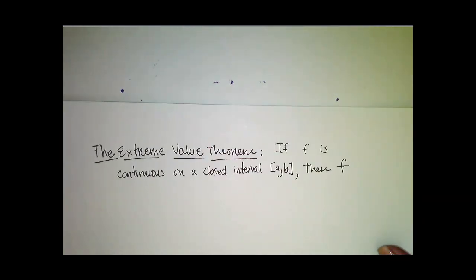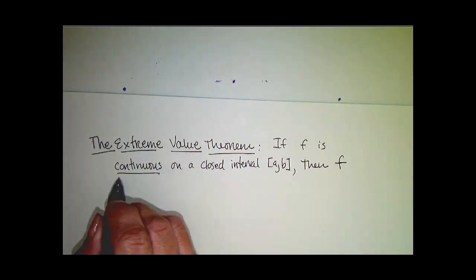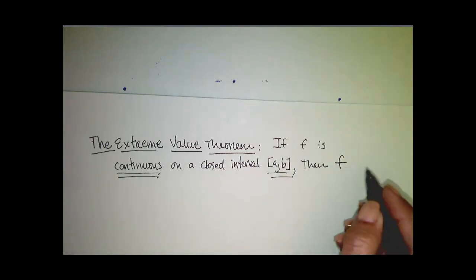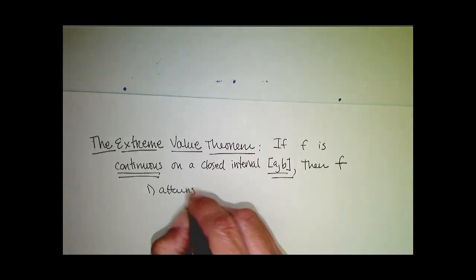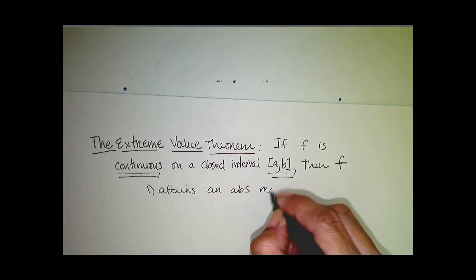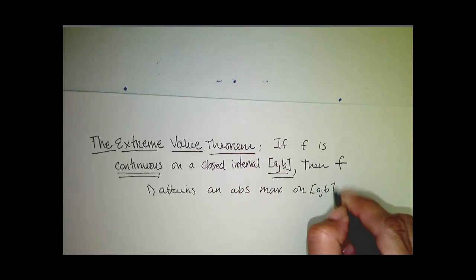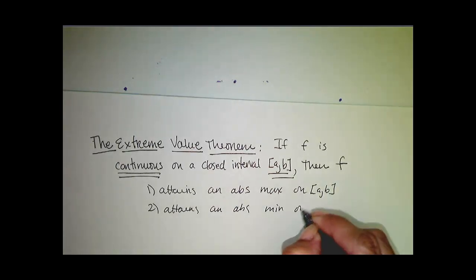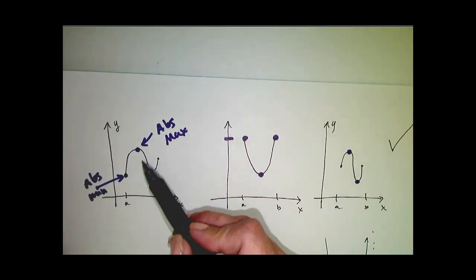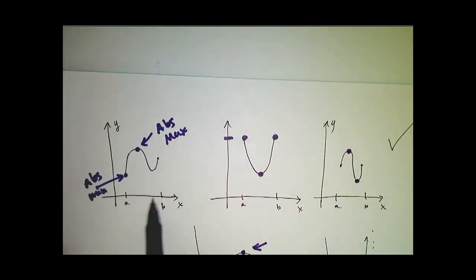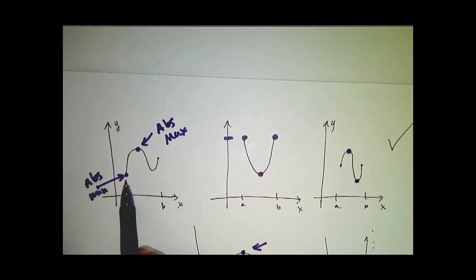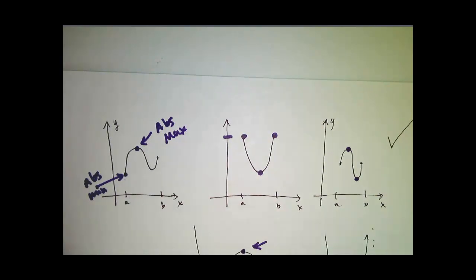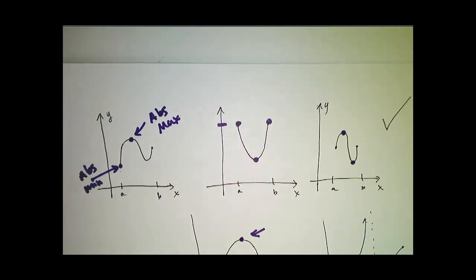That's pretty important. I think we should give a name to that theorem, and we do — it's the Extreme Value Theorem. If f is continuous on a closed interval [a, b], then f attains an absolute maximum on [a, b] and it attains an absolute minimum on [a, b]. Notice that in our pictures from before, sometimes that maximum occurred somewhere in between a and b, and sometimes the absolute max or absolute min occurred at an endpoint. That's going to be important when we try to find these values.